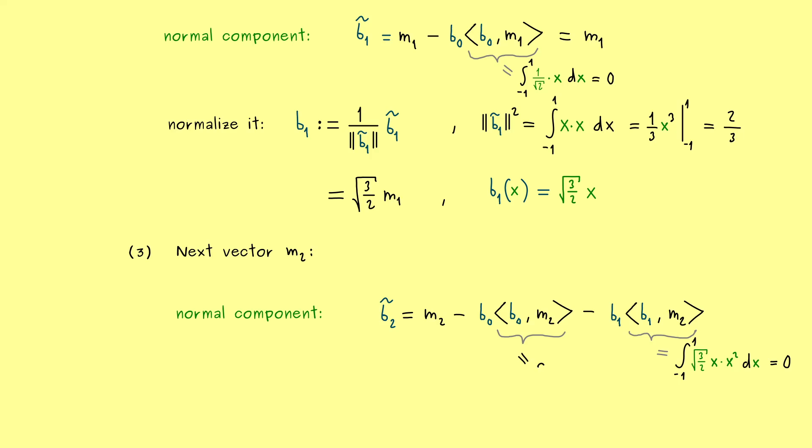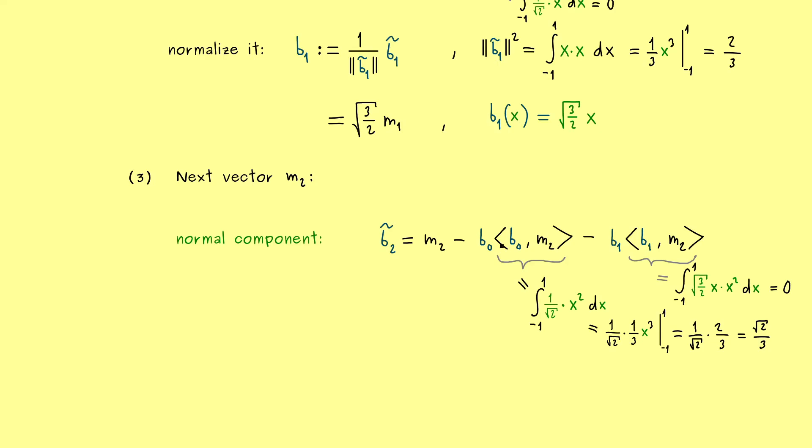However, the second integral here might be more complicated. There we have to combine the constant function 1 over the square root of 2 with x squared. So also not a problem, because the antiderivative is simple. In fact, you might remember this calculation from before. So what we get out here is 1 over the square root of 2 times 2 thirds. So it's just the square root of 2 over 3. And now please don't forget, we have to multiply this with the constant function b0. And b0 also has a square root of 2 in, so this will cancel out. So actually we have here minus 1 third times m0. And as a reminder, if you write b2 tilde as a function depending on x, we get out x squared minus 1 third.